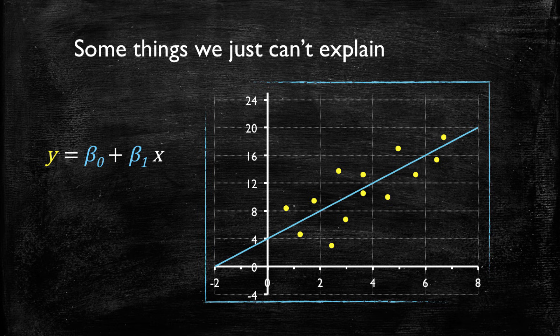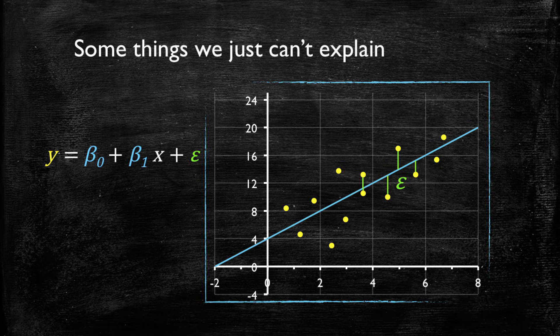However, note that the observations do not lie over the straight line. There are small distances from the observations to the actual model, which means the model does not entirely reflect reality and there is an error here. And this is why we have an error term in our simple regression models.